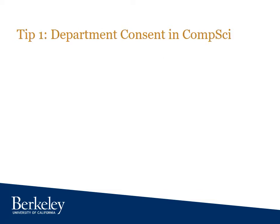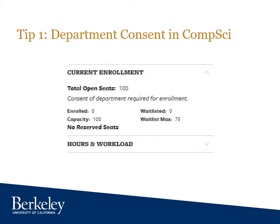Tip one: department consent really means the class is temporarily closed. This is unique to the computer science department — other departments don't use the setting that way. When we intend to offer a class but are unable to open it right now, we set it to department consent. You'll see this on classes.berkeley.edu or in Cal Central when you try to enroll. The recommended action is to be patient and check back periodically. When we're able to open the class, we'll remove this setting and post to the EECS 101 section of piazza.com.